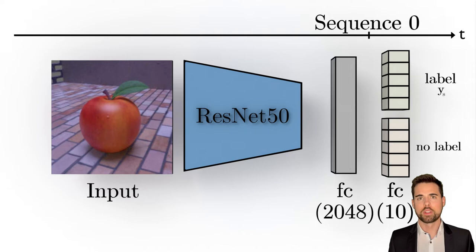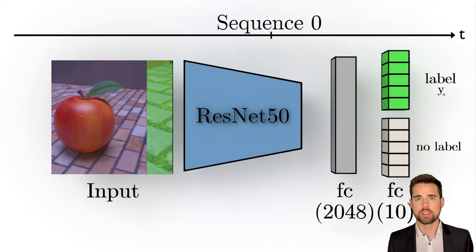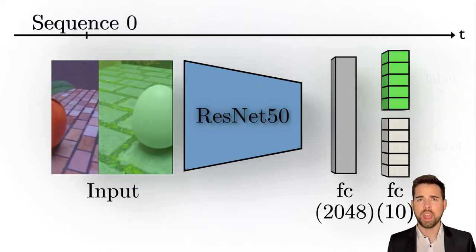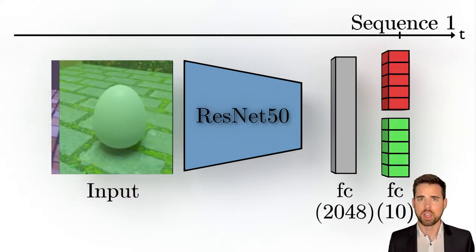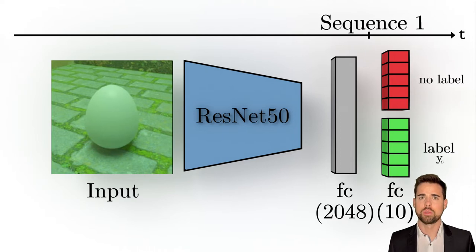The second problem emerges after successfully training the first sequence containing five initial classes. Here we do not have the labels of the previous classes, causing the network to forget them with every training step. As soon as the network is able to classify all new classes, the old ones are entirely forgotten.